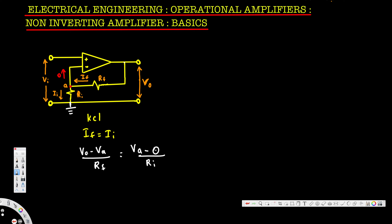Now our purpose is to find va. You can see there's nothing in between — if this is va, then the voltage across this negative terminal is also going to be va. If the voltage across the negative terminal is va, then the voltage across the positive terminal is also going to be va. And we know that voltage across the positive terminal is equal to v input. So we can replace va with vi. Our equation becomes: v0 minus vi, divided by rf, equals vi divided by ri.